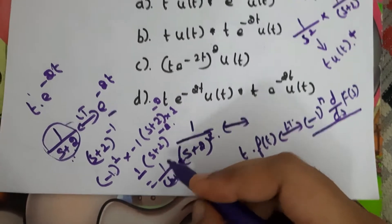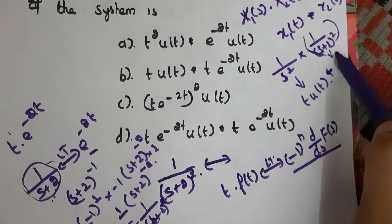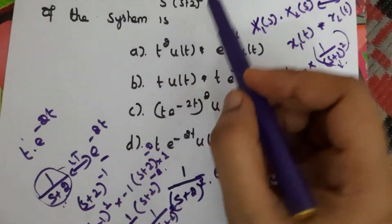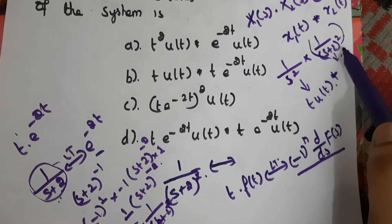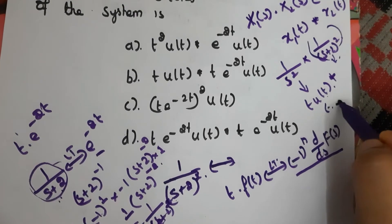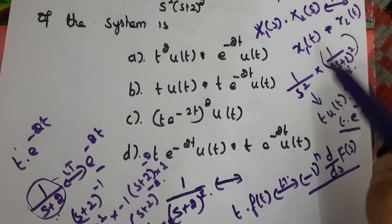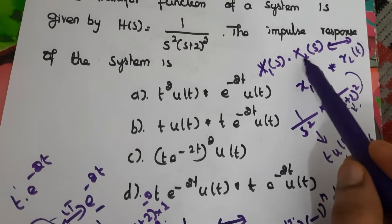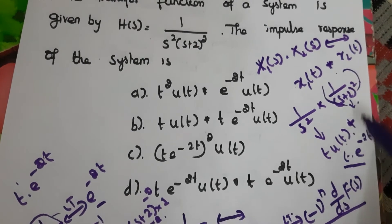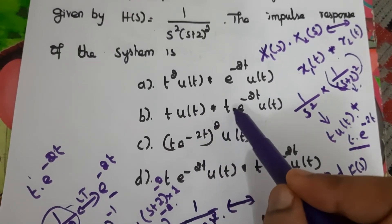So the inverse Laplace of 1/(s+2)² is t·e^(-2t). Since multiplication in the s-domain equals convolution in the time domain, x₁(t) = t·u(t) convolved with t·e^(-2t). The answer here is B.